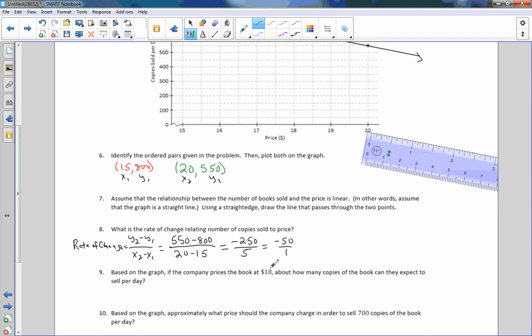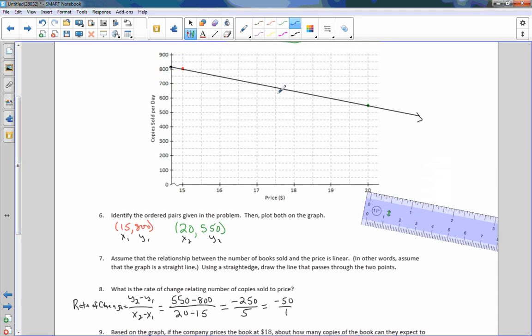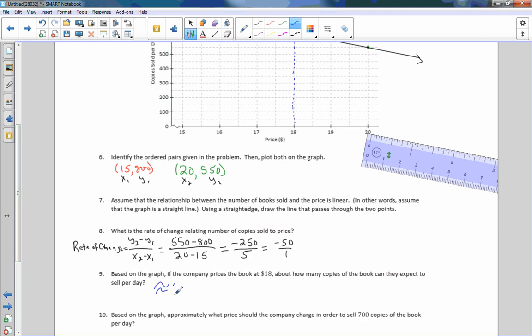Based on the graph, if this company prices the book at $18, about how many copies of the book can they expect to sell per day? I can go to $18 and come up here and see where that line is, and it looks like it is about here. If I go over, that is looking like 650. So I will say approximately 650 books per day if the books are $18.